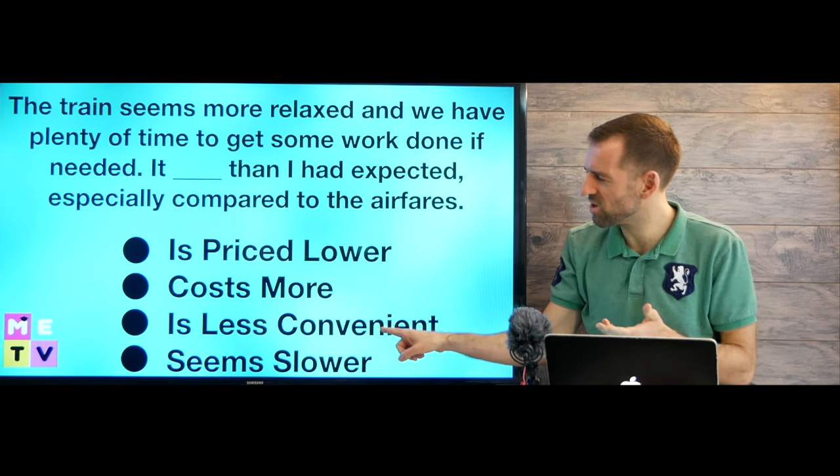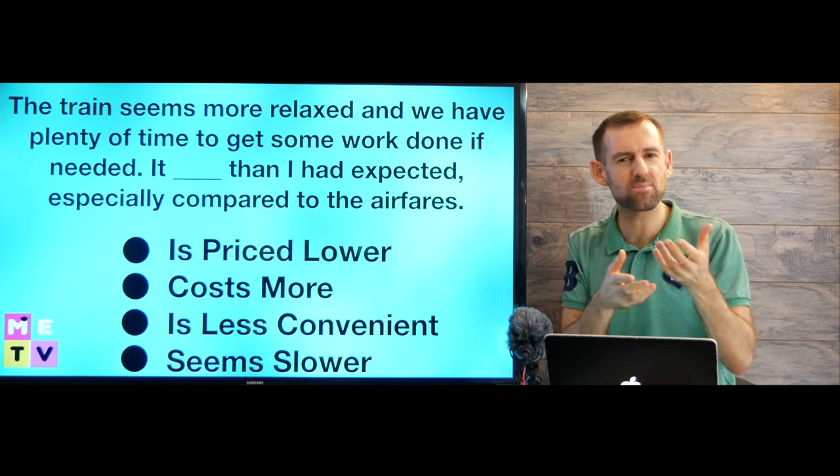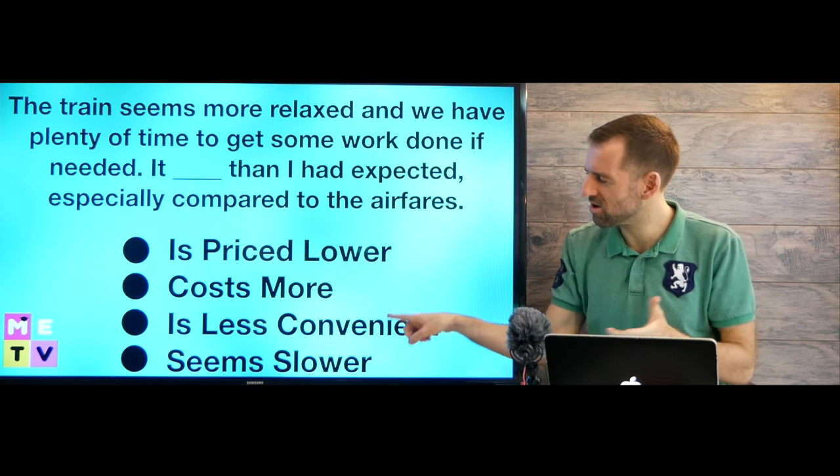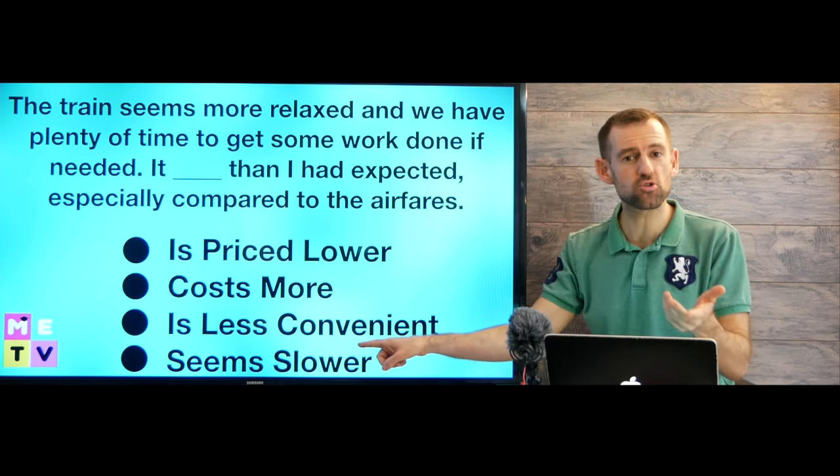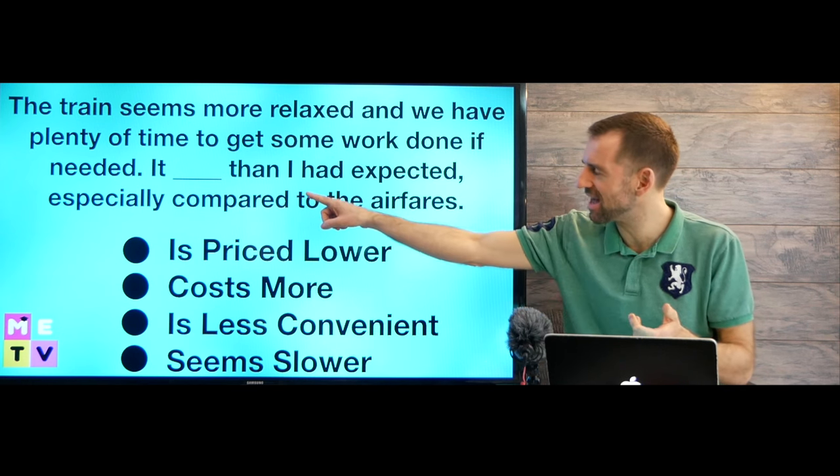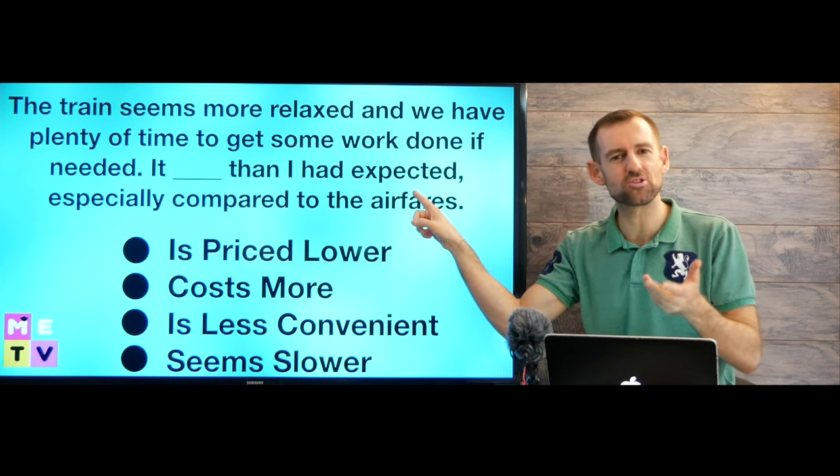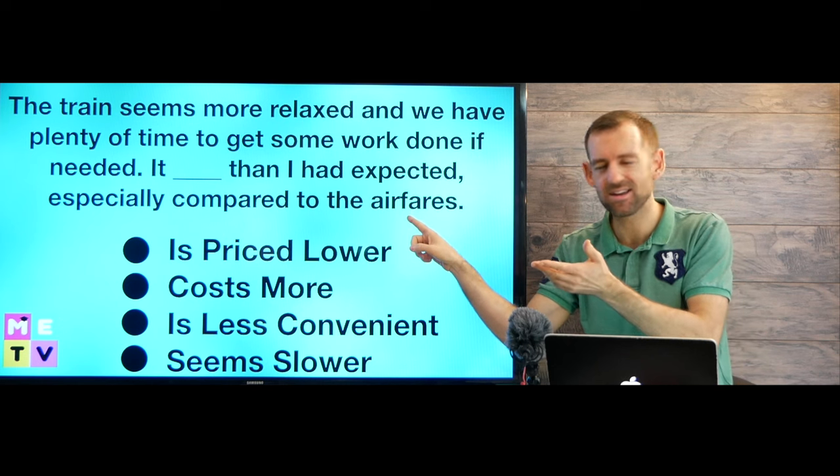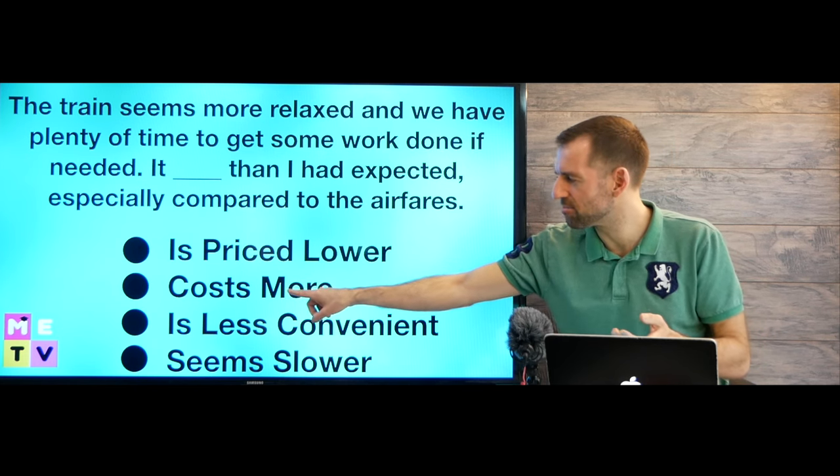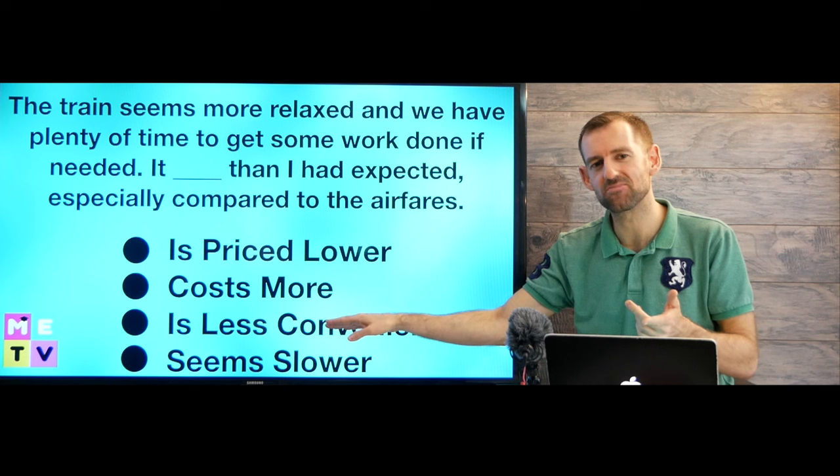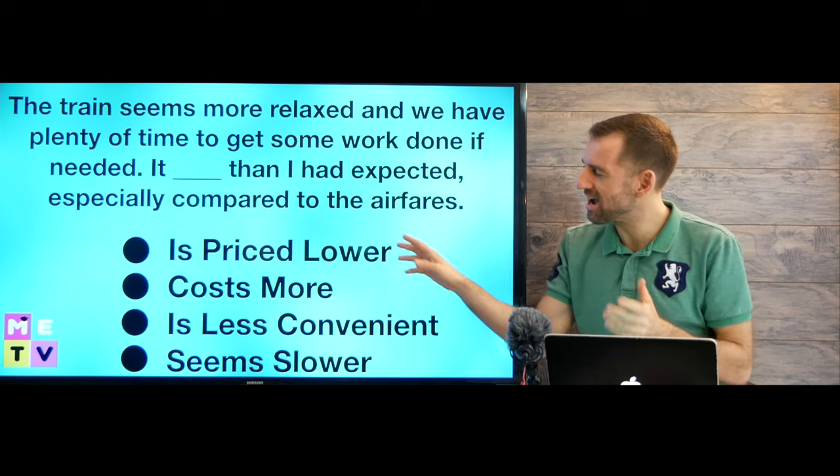Let's look at our other options. Is less convenient. We don't really know. We're not comparing convenience. The diagram didn't talk about convenience really. It seems slower. Obviously the train is slower. But this can't be the answer because it says than I had expected. Everyone expects the train to be slower than the plane. So that one wouldn't make sense there. So we know it's this one by process of elimination. If you're not sure what the correct answer is, but you can eliminate the other choices.